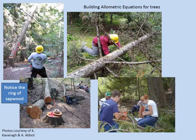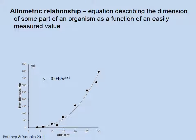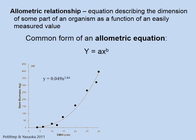Can you think how to calculate sapwood area from a tree core? The allometric equation that describes stem biomass in relation to its diameter is naturally a power function with two constants: a, the multiplier, and b, the exponent. There are different forms of allometric equations, but this form is most commonly used for describing biomass as a function of stem diameter.